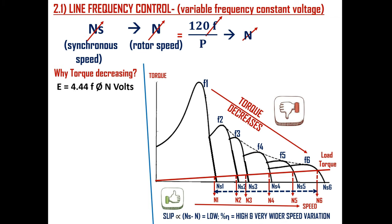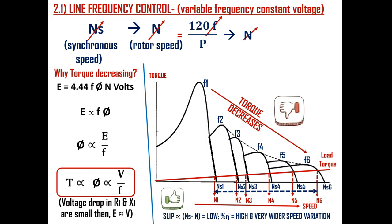The RMS value of induced EMF E for AC machines is 4.44 × F × Phi × N volts, where F is the frequency in Hertz, Phi is the magnetic flux, and N is the total number of series turns per phase. So EMF is directly proportional to frequency F and flux Phi, or in other words flux is directly proportional to EMF E divided by frequency F. The interaction of fluxes creates torque in the motor. So torque T is directly proportional to flux Phi, which is directly proportional to voltage V divided by frequency F — writing V instead of E, which is valid if the voltage drop in stator resistance R1 and reactance X1 are small.